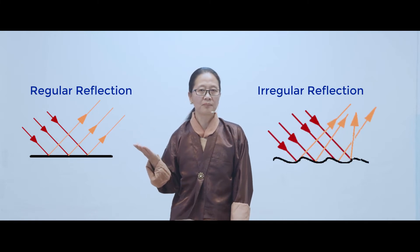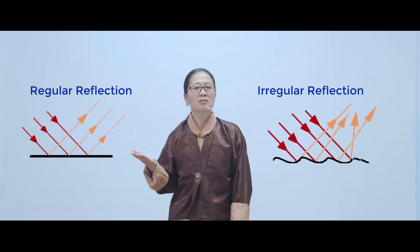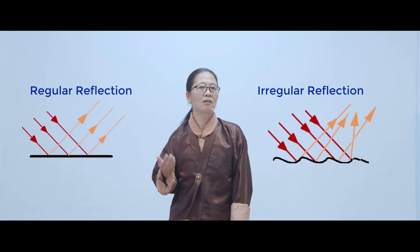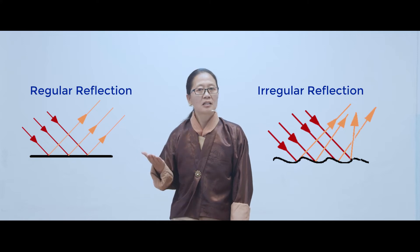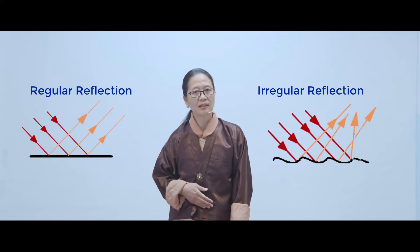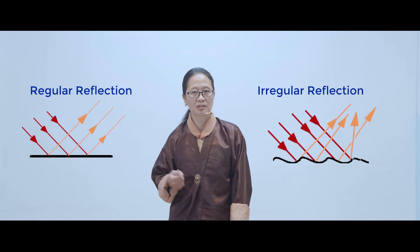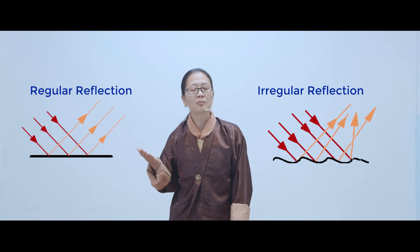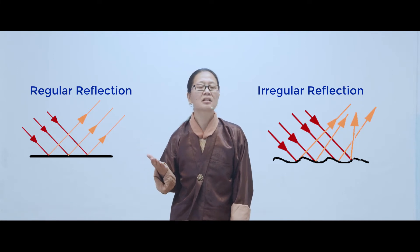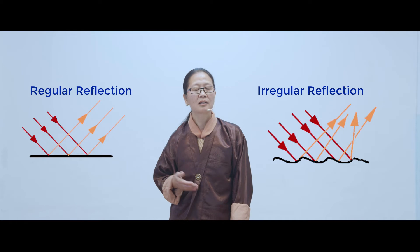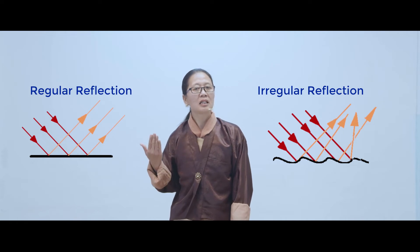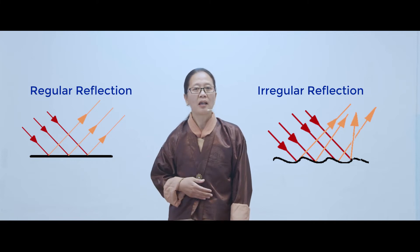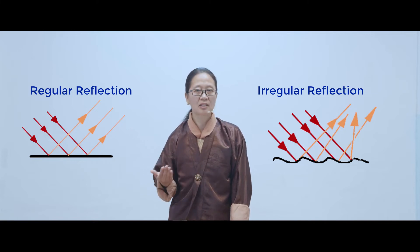As you can see here in the diagram, regular reflection takes place on a smooth surface whereas irregular reflection takes place on a rough surface. It is due to regular reflection that when the reflected rays from a smooth surface intersect each other, they form different types of images. And it is due to irregular reflection that we are able to see the things around us.